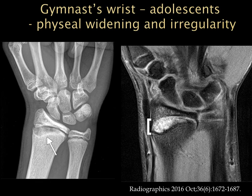Another common entity is gymnast wrist, seen in adolescents. This involves physeal widening and irregularity that is better appreciated on MRI.